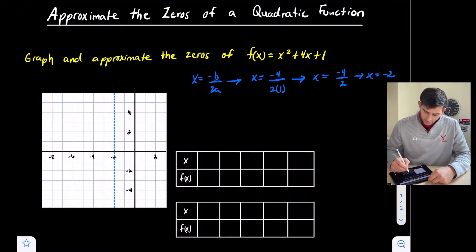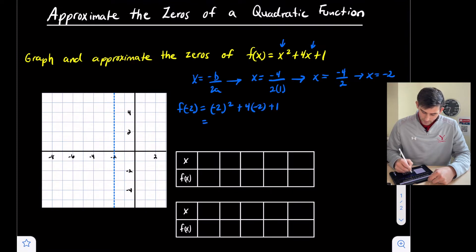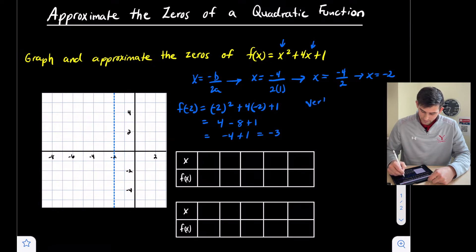We're going to plug negative 2 in for x to find f(-2). So we take (-2)² + 4(-2) + 1, which gives us 4 minus 8 plus 1. That's negative 4 plus 1, which equals negative 3. So our vertex is at (-2, -3).